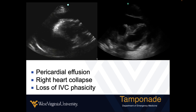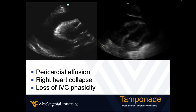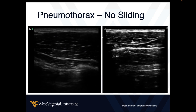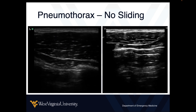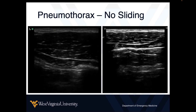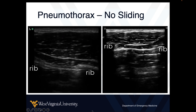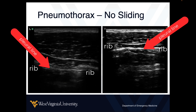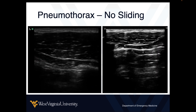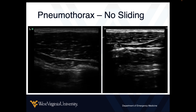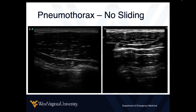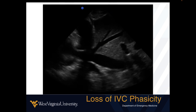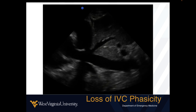In cardiac tamponade, you should also typically see loss of phasicity in the IVC — the opposite of hypovolemic shock, where the IVC is collapsed and compressible. Tension pneumothorax is another etiology of obstructive shock. Looking at the lungs, we see ribs with shadows, and along the pleural line we should see pleural sliding — but here we see absolutely none. If a patient is in shock and we don't see sliding, it's not a bad idea to decompress the chest. All forms of obstructive shock generally increase right atrial pressure, which transmits into loss of IVC phasicity.